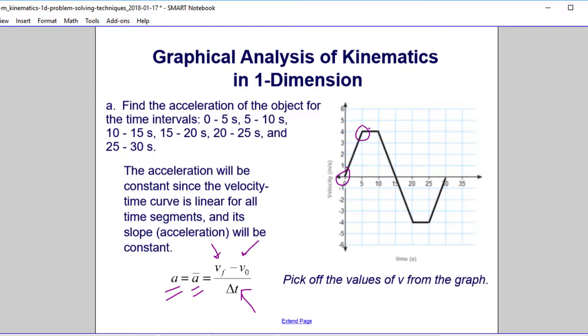So the first one, at time equals 5, the velocity is 4. Time equals 0, velocity is 0. So let's go to the next slide and start doing that.